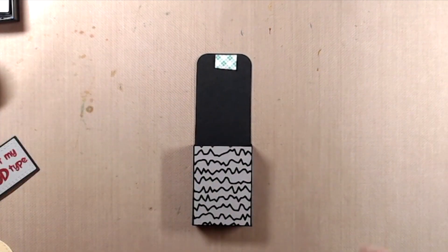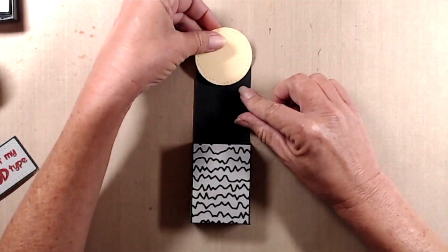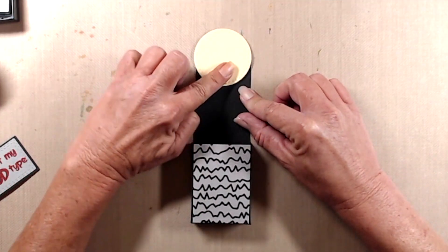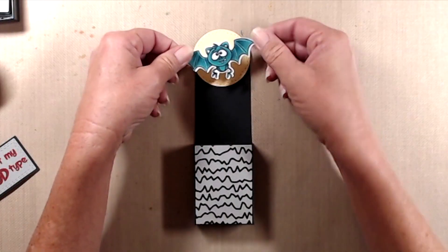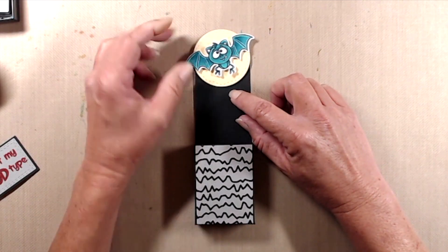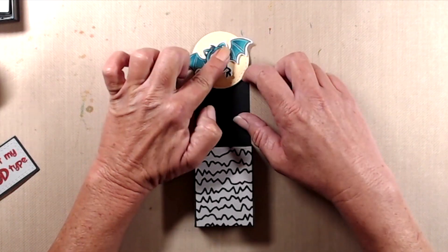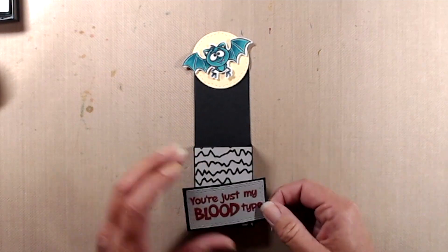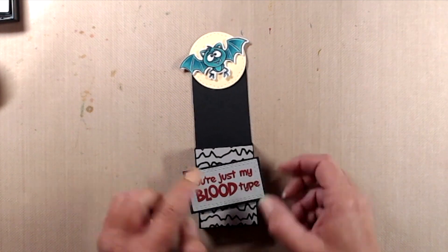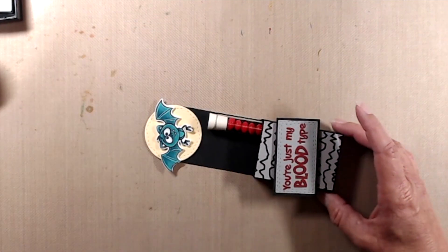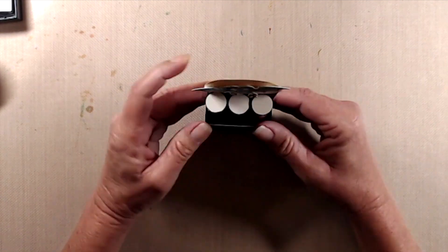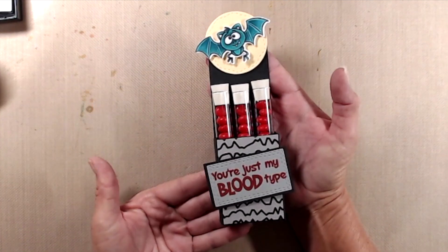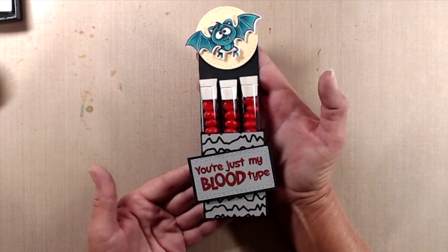I did color the bat off screen but I will have the Copic colors that I use listed over on my blog and I'll make sure to link to that blog post in the description box below. I did put a bunch of foam tape on the back side of the bat so he would be popped out a little bit and for the sentiment I stamped it with red ink and heat embossed it with red embossing powder on a piece of gray cardstock and die cut that using the smallest rectangle from the wonky stitched rectangle die set and then I adhered that to the front of the box with a little bit of foam tape and that finishes up our little project for today.